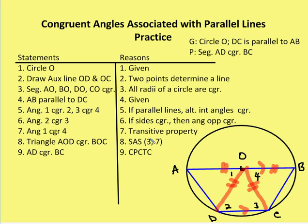I can say that angle two is congruent to angle three because if sides are congruent, the angles opposite them are congruent. Now I can say that angle one is congruent to angle four — so yes, the angles are in the correct order. Angle one is congruent to angle four by the transitive property. Now I can say triangle AOD is congruent to triangle BOC by Side-Angle-Side.